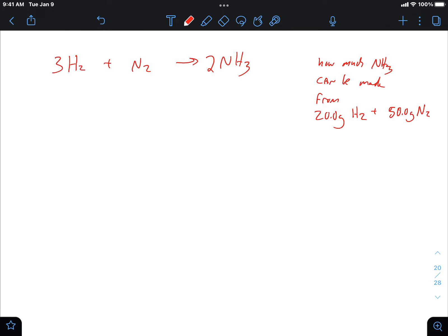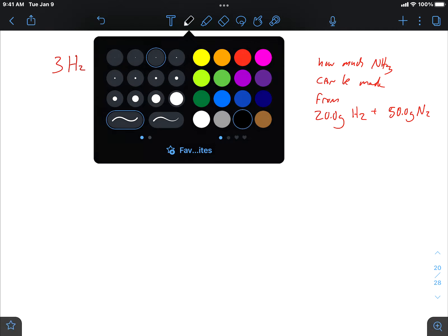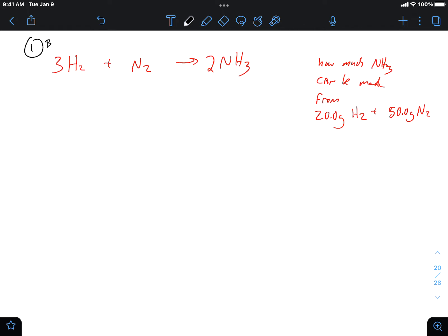Okay, so I have a balanced equation. I have two reactants here. Your first step is to have a balanced equation, which is done. I'll annotate this: step one, I have a balanced equation.